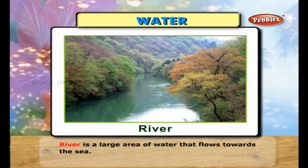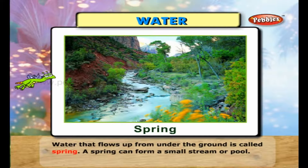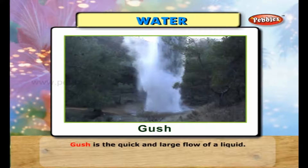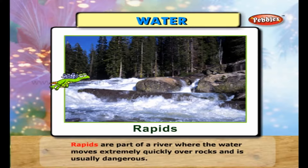A river is a large area of water that flows towards the sea. Water that flows up from under the ground is called a spring. A spring can form a small stream or pool. Gush is the quick and large flow of a liquid.